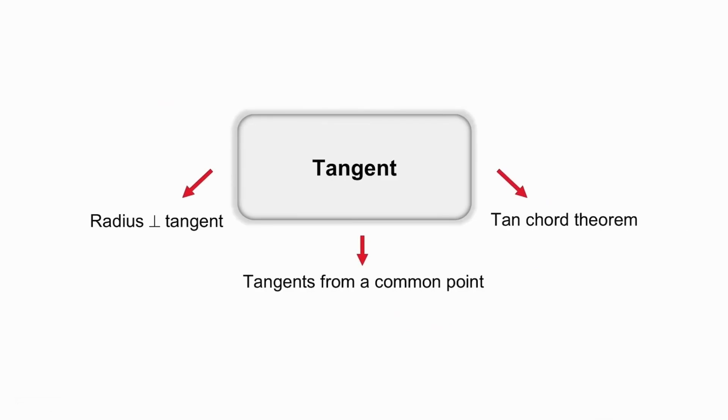If they mention that a line is a tangent, there are three facts that you know. A radius or diameter is perpendicular to a tangent. If there are two tangents meeting at a point, you know that they are equal. And then you have the tan-chord theorem, where you know that the angle between the tangent and a chord is equal to the angle in the alternate segment.